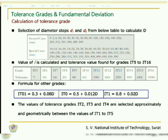For example, if the basic size is 25 mm, then the diameter step of 24 to 30 is selected and accordingly the value of D is determined. With this value of D, the value of i is calculated and the respective tolerance value is found for grades IT5 to IT16 from the table.